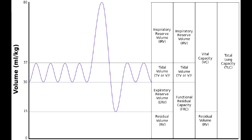Describe all the different lung volumes. When a person is just doing normal inspiration and expiration — this is quiet breathing — the amount of air that comes into the lung with each quiet inspiration is your tidal volume, and this is around 500 ml.